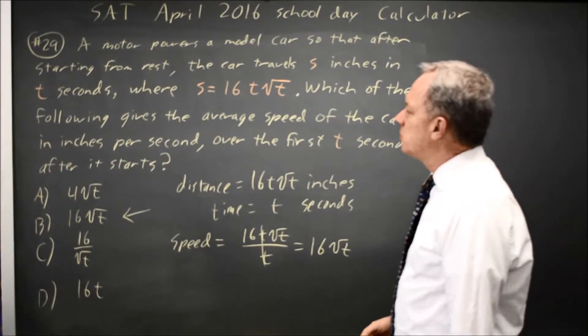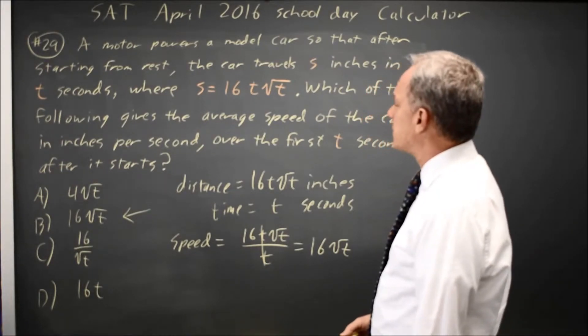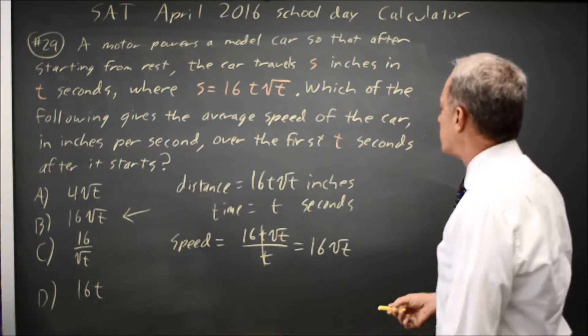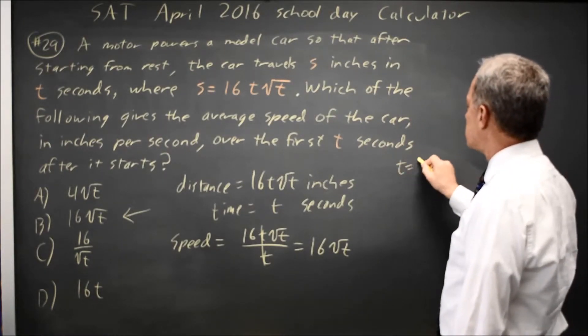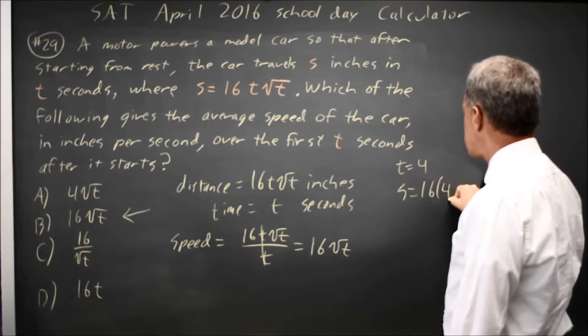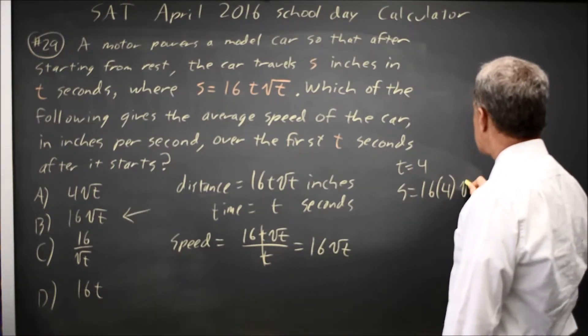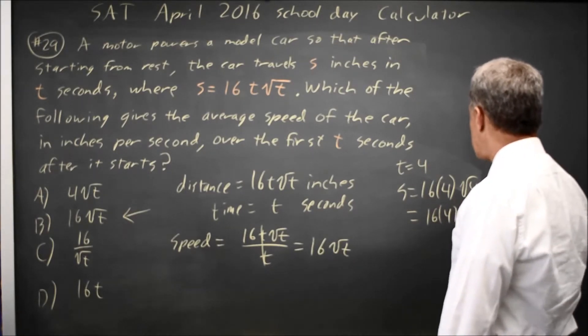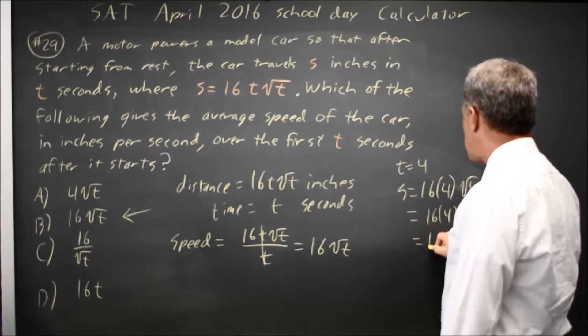But another way to do this is to use some test values. And I'm going to use t equals 4 because I can take a square root of 4. So if t equals 4, s equals 16t, so that's 16 times 4, times √4, which is 16 times 4 times 2, which is 128.